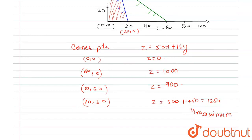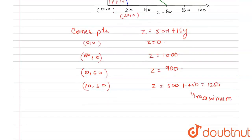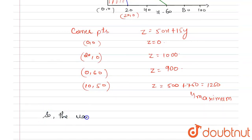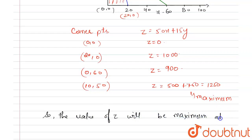So the value of z will be maximum at the corner point (10, 50), where z equals 1250.